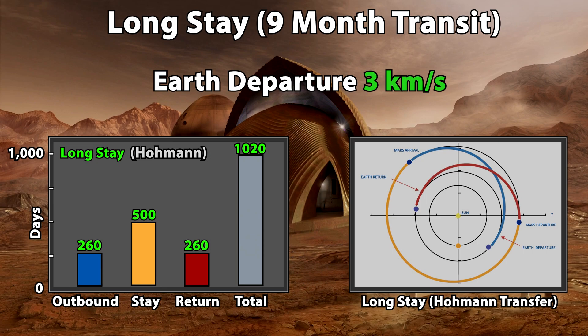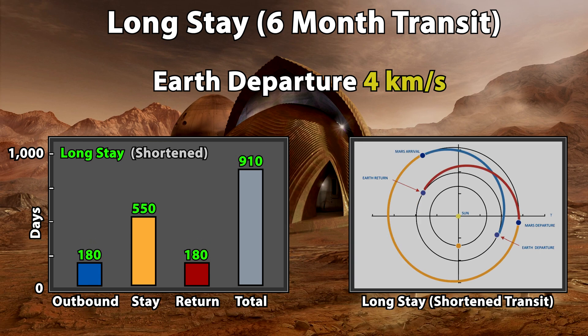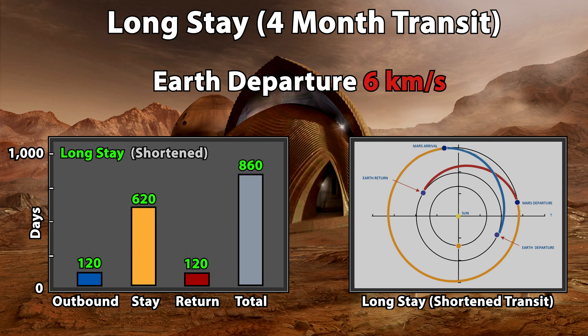As discussed, the average Hohmann transfer to Mars requires 260 days to accomplish. You could get to Mars in just 180 days by traveling 1 km per second faster, or with even more propulsion you could get there in as little as 120 days, but this extra velocity makes it harder to land safely on arrival.